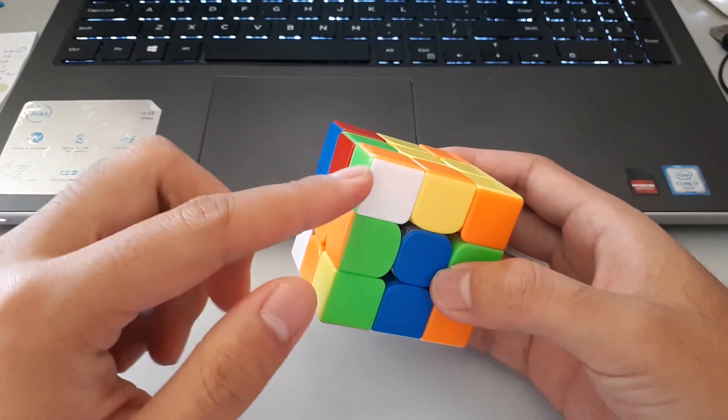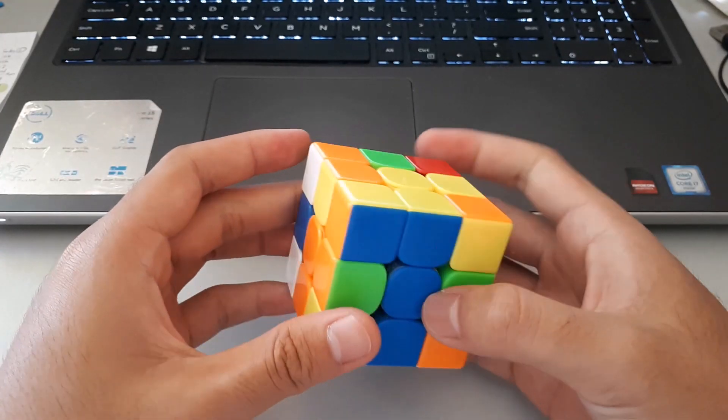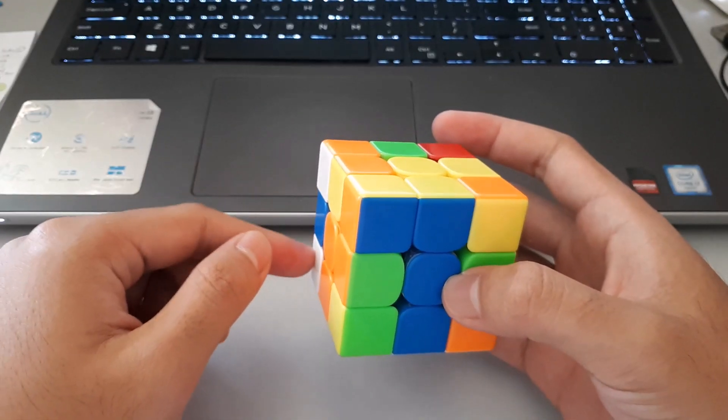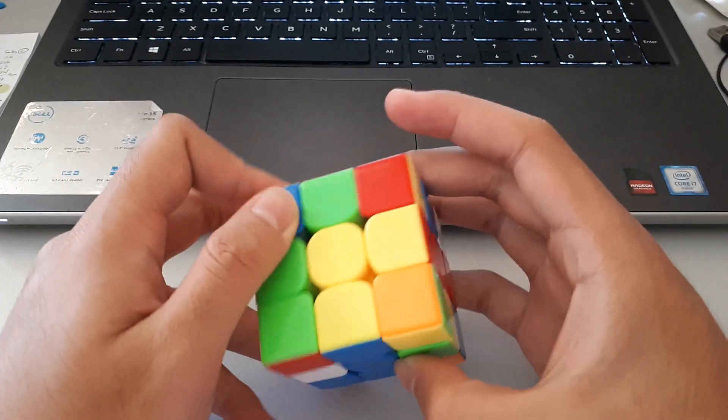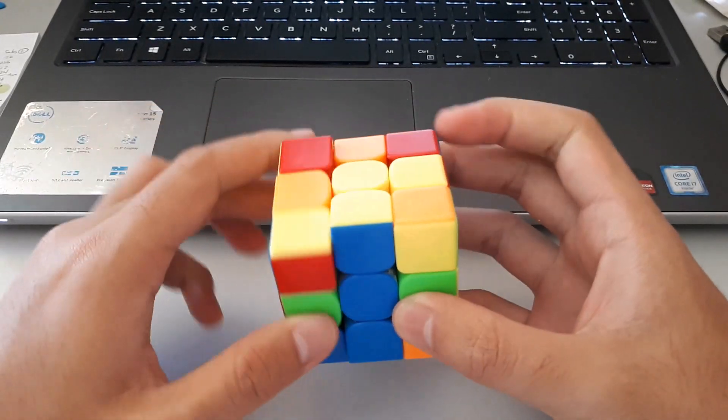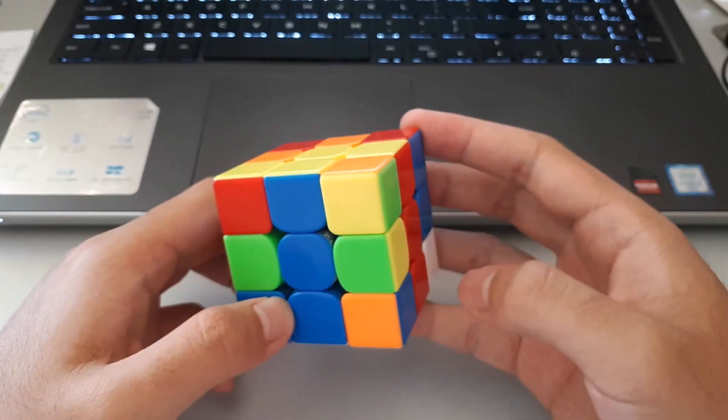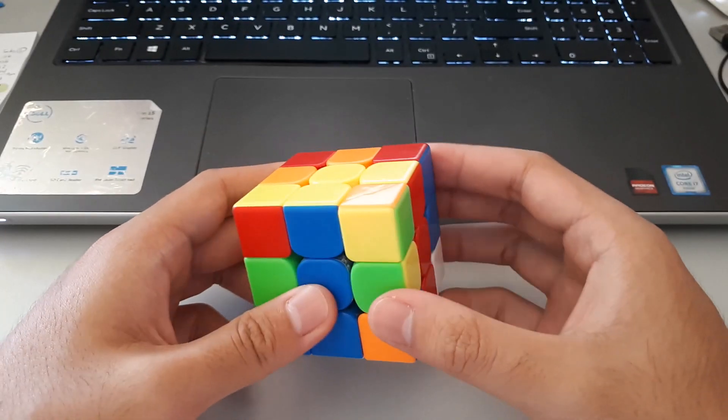I'll probably go to this F2L pair first. So here, the corner is set up over its slot, so I could actually just cancel into the insert like that, and that takes care of that.